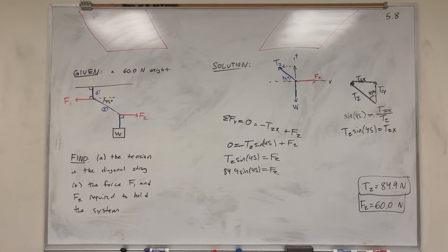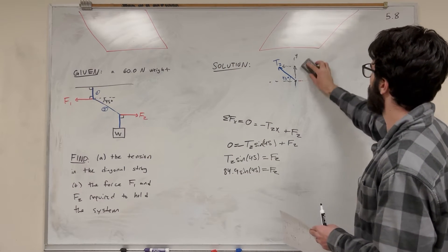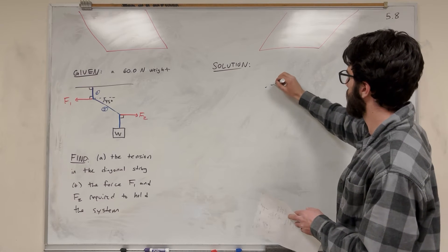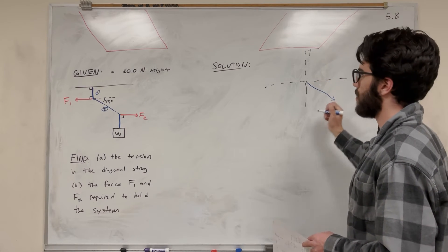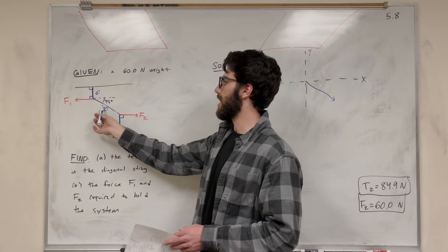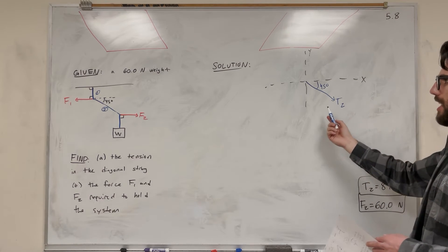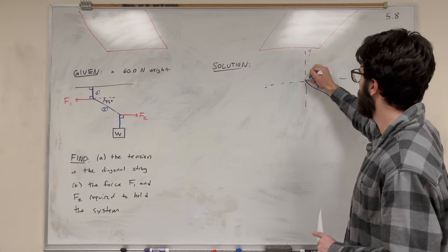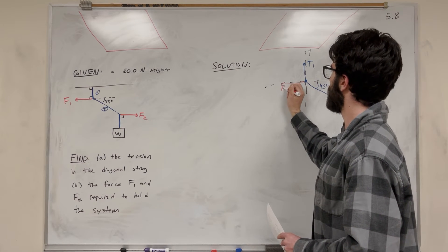So if we're pulling down and that weight is 60 Newtons, the force to the right is also 60 Newtons. Now we need to find F1, so we go up to this upper intersection point and make another force body diagram. Tension 2 is going to be pulling down to the left at a 45 degree angle — this T2 is the same T2 since tension in the rope is constant throughout, but pulling down instead of upward this time. There's also T1 pulling upward, and F1 pulling to the left.